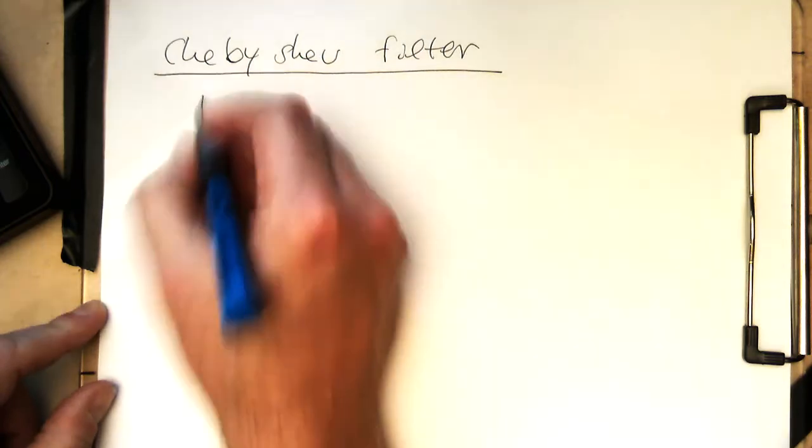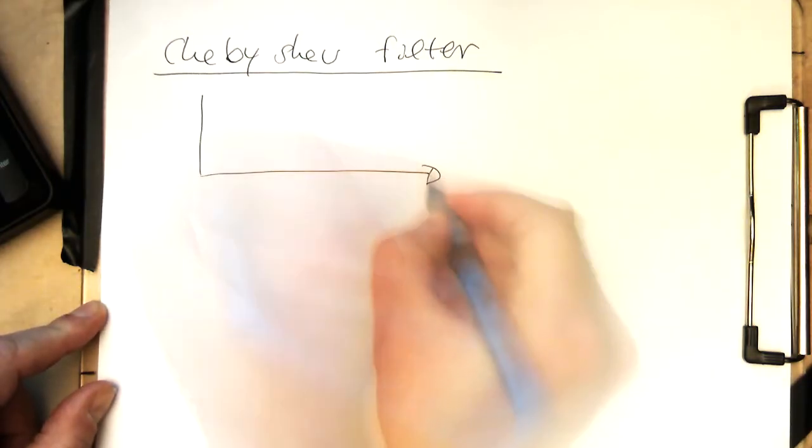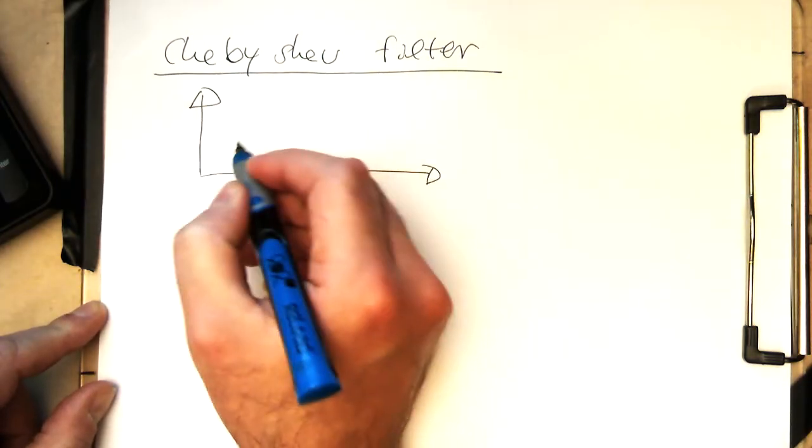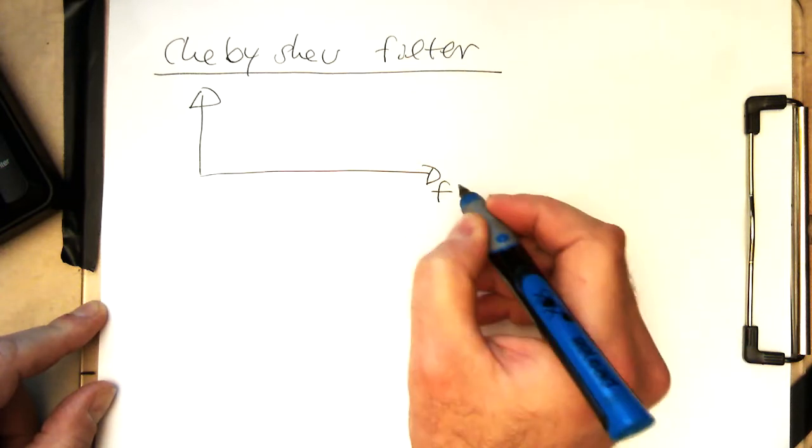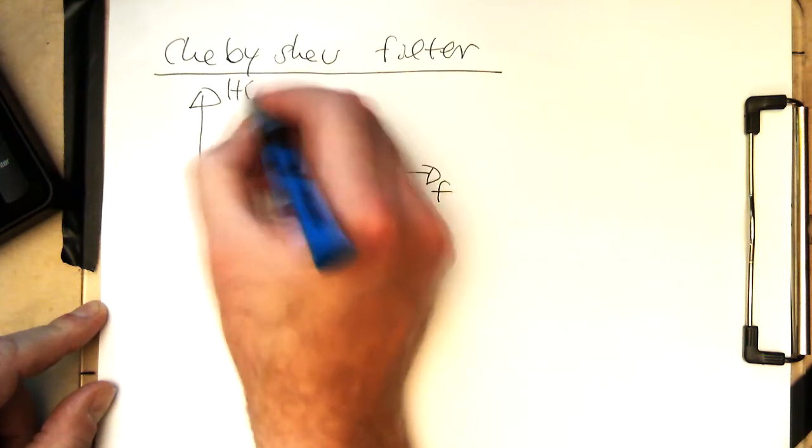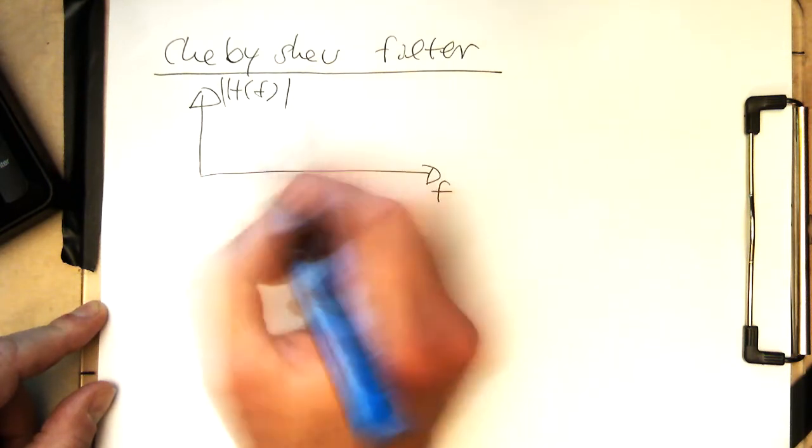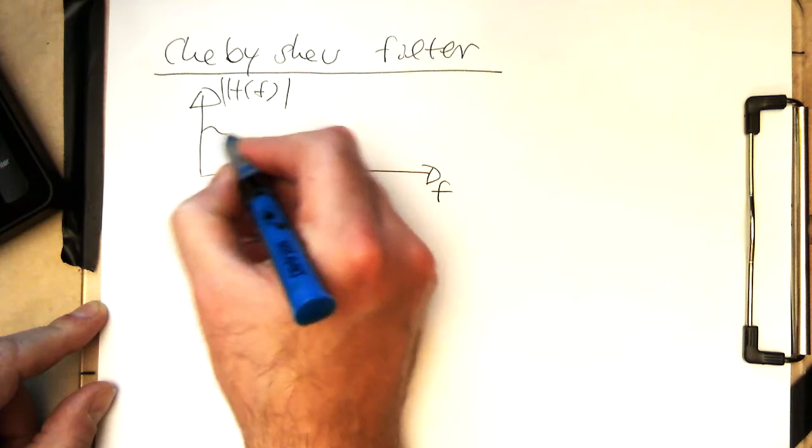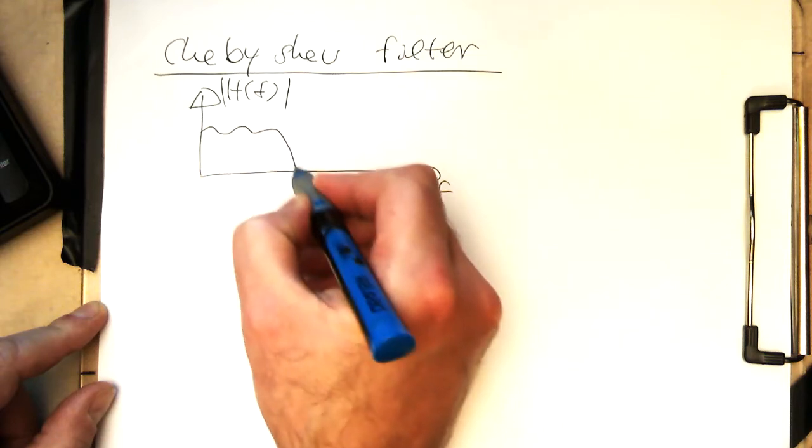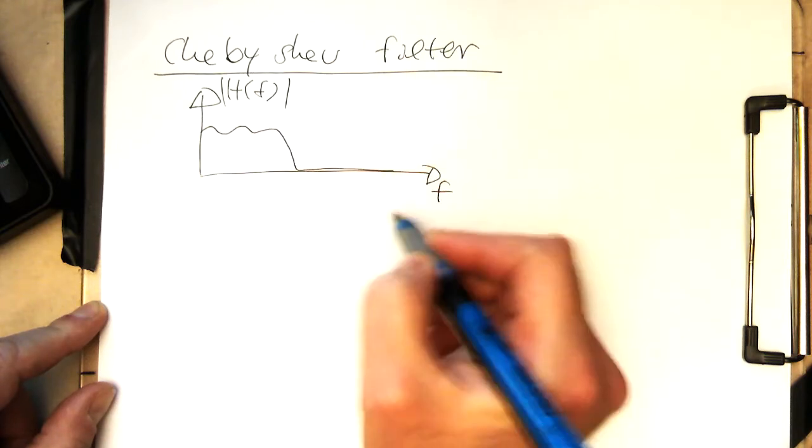So when we think of the frequency response here, it's actually quite a useful filter. So if this one is here, our frequency f here, and that's here h in the response, and we have some ripples, and then this goes like this here.